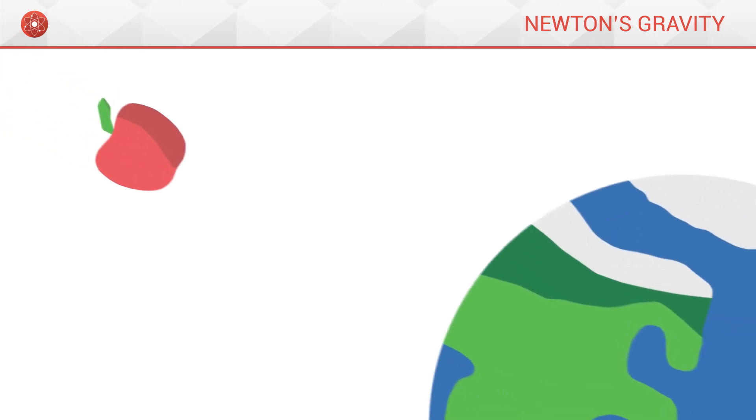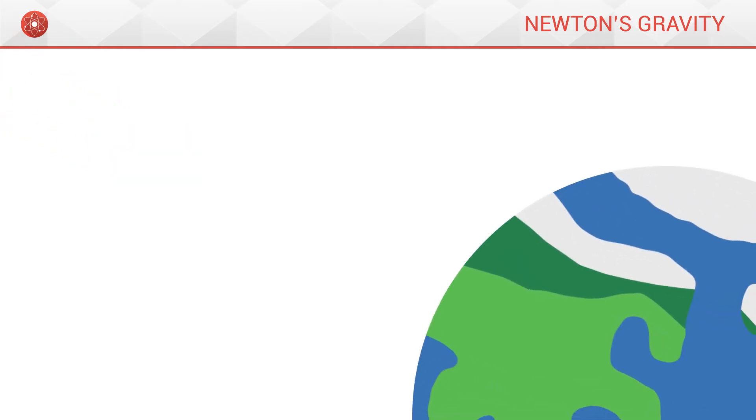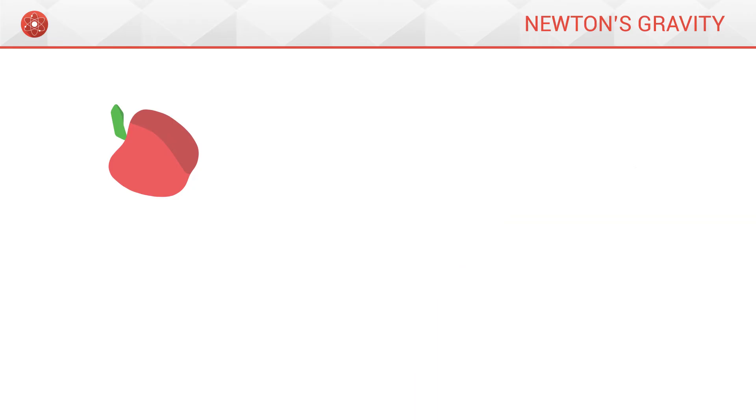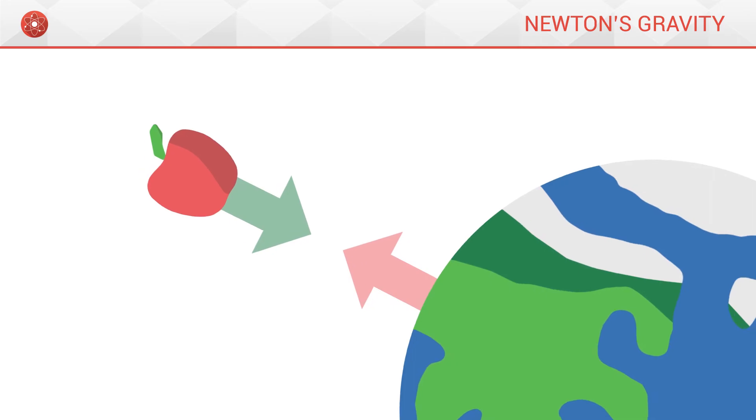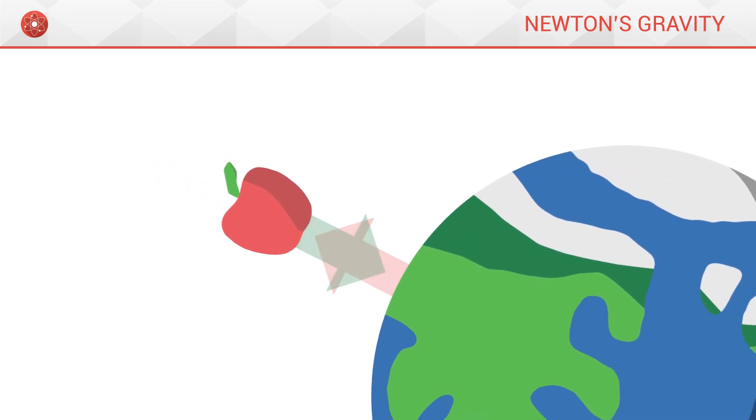Let's now take the example of an apple. The apple possesses a certain mass, and so does the Earth. So, the apple attracts the Earth, and inversely the Earth attracts the apple. This is why the apple and the Earth will get closer one to the other, up until the apple touches the ground.